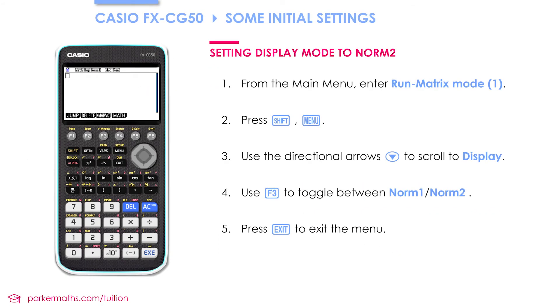Let's take a look at how we can switch the display mode. This calculator is currently in norm 1 mode, so if we do 1 divided by 1000 we should get an answer in standard form.